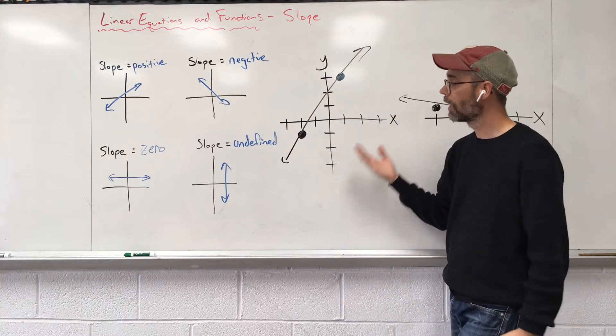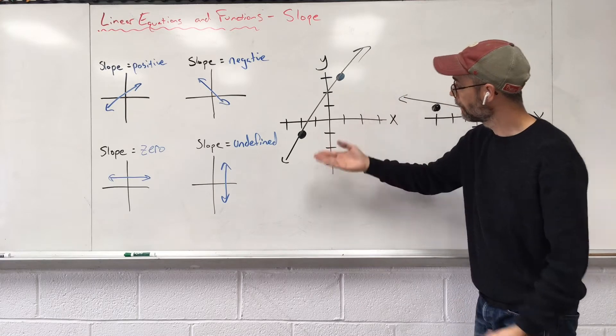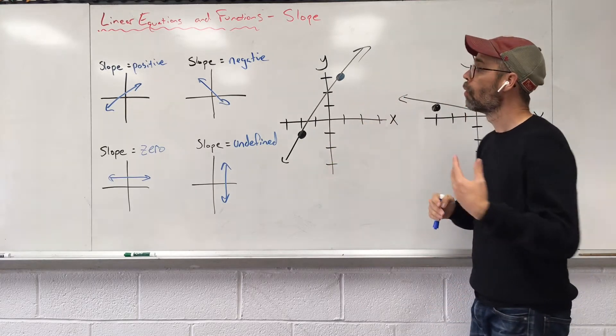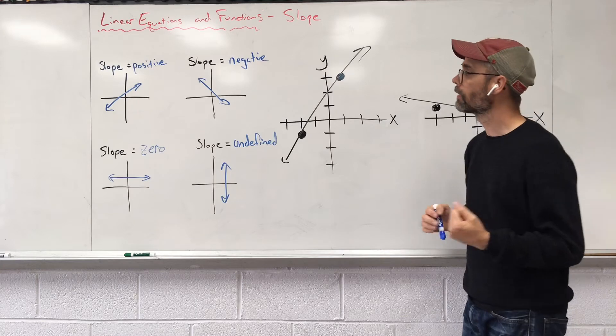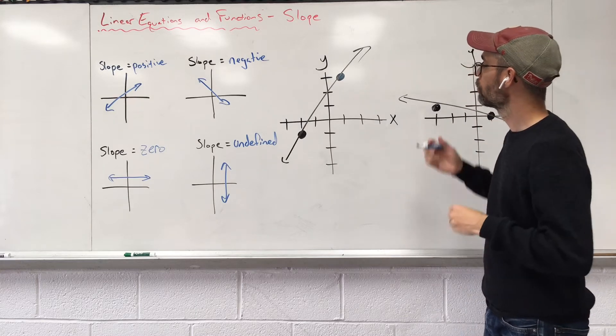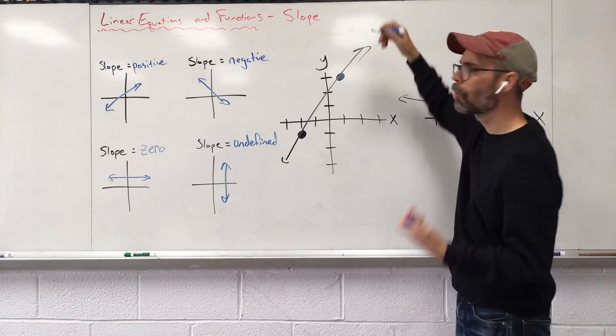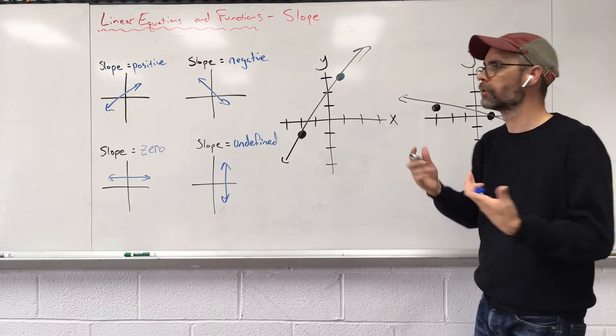What about if we have a graph with coordinates on there and that line connecting them? We want to find an actual number for that slope. In order to do that, we need something, a word or group of words that we can use.